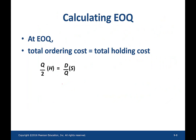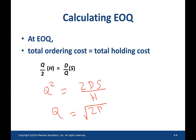So if you solve this equation for Q, you would get the EOQ formula. Taking all the Q terms to the left and the rest of the terms to the right, Q squared equals 2 times D times S over H. Taking a square root on both sides, that leads to the square root of 2DS over H. This is nothing but our economic order quantity.